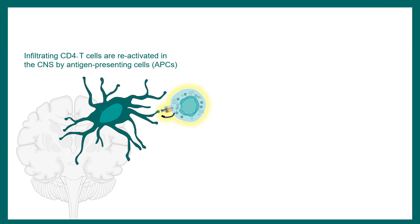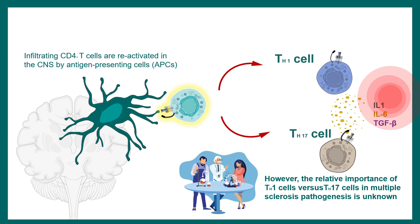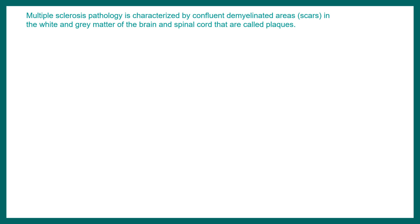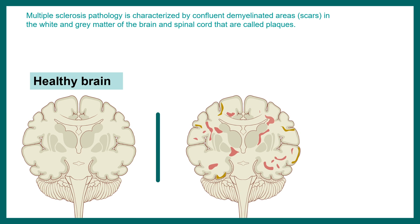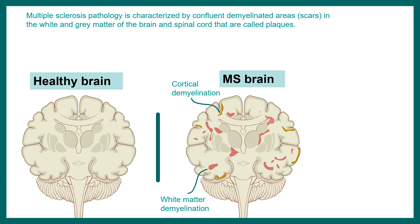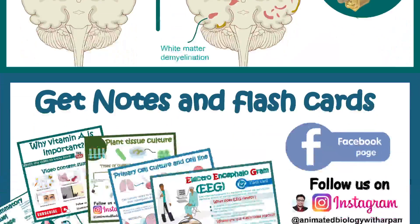There are also different T cell subtypes involved, such as Th1 and Th17, each of which secretes inflammatory cytokines that worsen the situation. Overall, in multiple sclerosis, compared to a healthy brain, there is scar formation in the central nervous system and white matter tracts. Loss of myelination is a hallmark of multiple sclerosis.